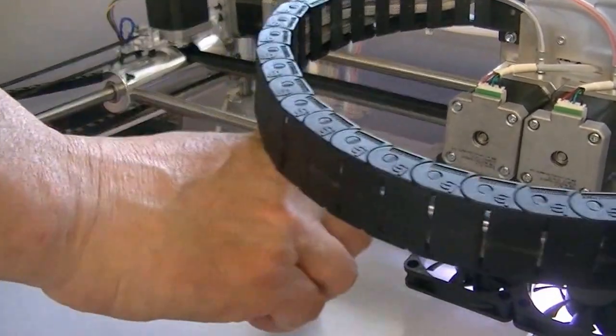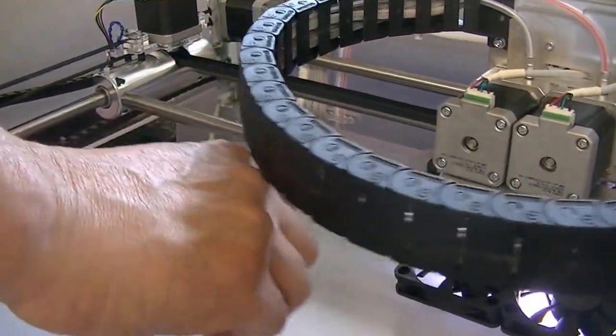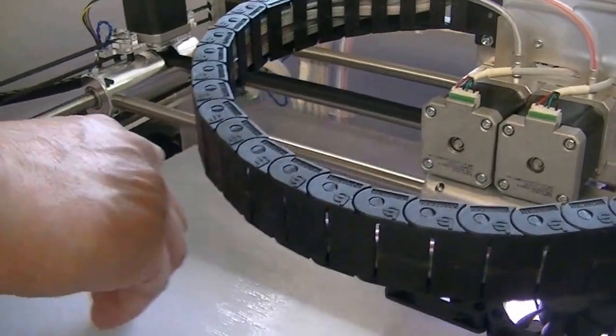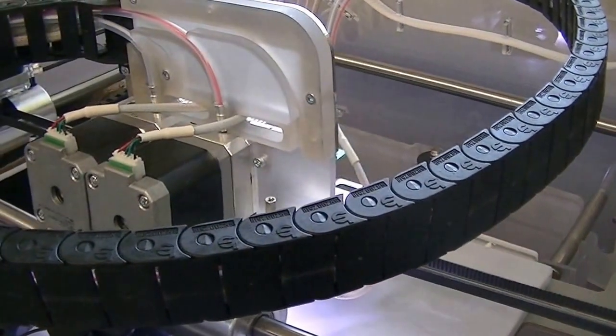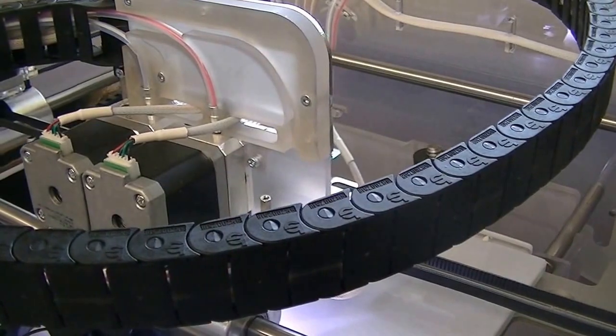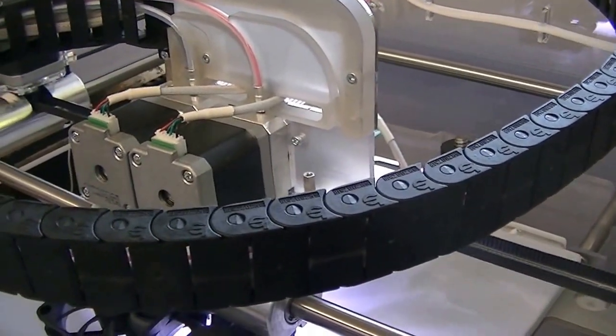What we need to do in order to print is to apply glue to the print platter. The glue will keep the melted plastic from shifting during the printing process and enable us to remove the end product more easily.